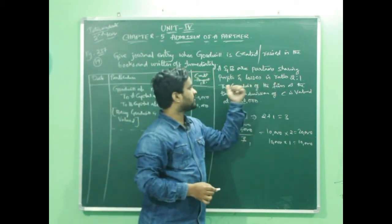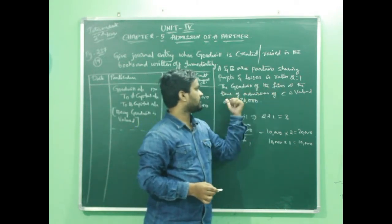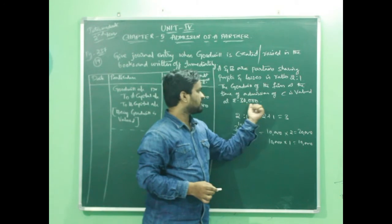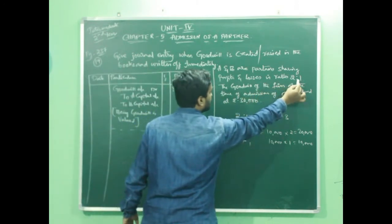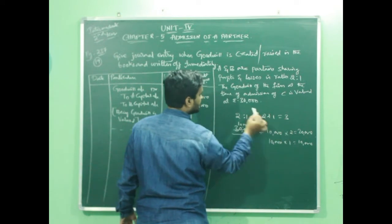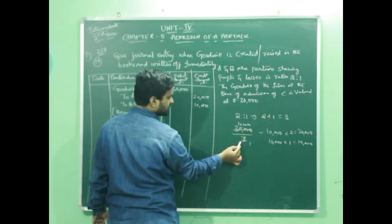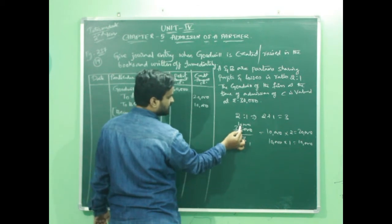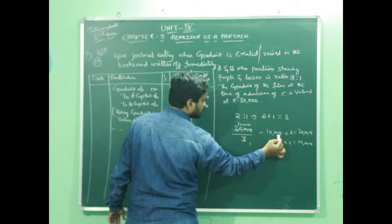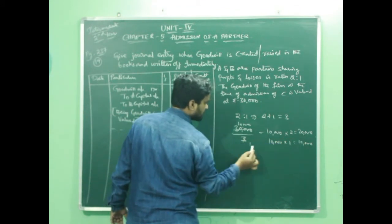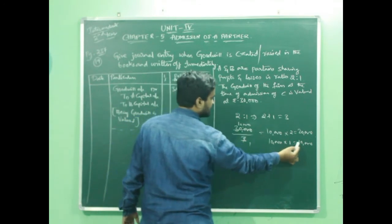A and B are partners sharing profit and losses in ratio 2:1. The goodwill of the firm at the time of admission of C is valued at Rs. 30,000. So the profit sharing ratios are 2:1, meaning 2 plus 1 equals 3. The value of goodwill is 30,000 divided into 3 shares — each share is worth 10,000. As A has 2 shares, he will get 20,000; and as B has 1 share, he will get 10,000.